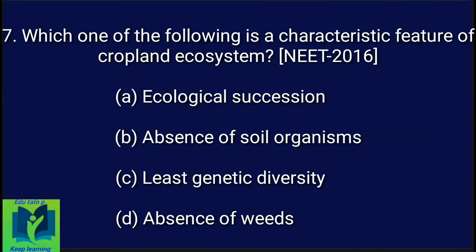Which one of the following is a characteristic feature of a cropland ecosystem? Option A: Ecological succession. Option B: Absence of soil organisms. Option C: Least genetic diversity. Option D: Absence of weeds.